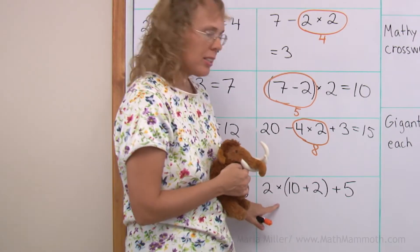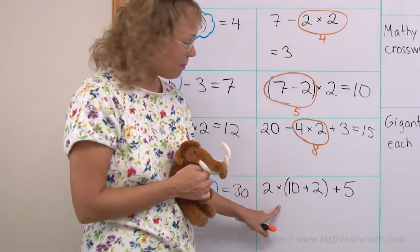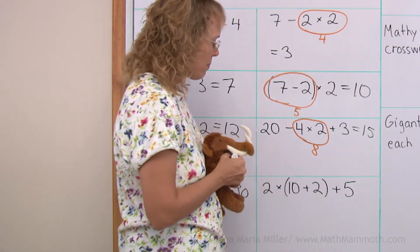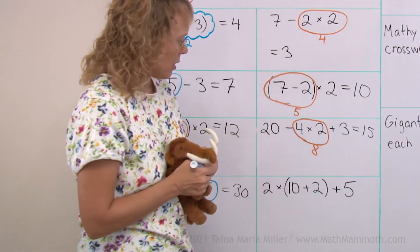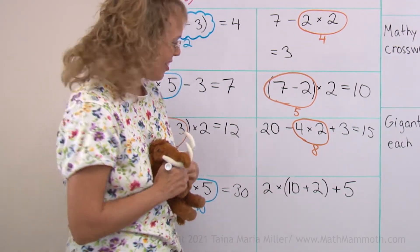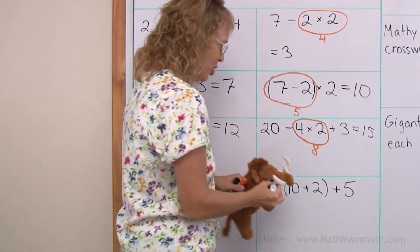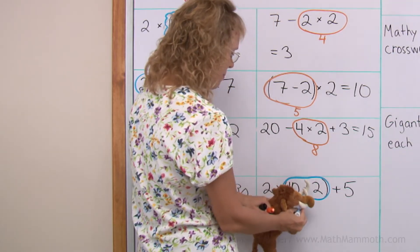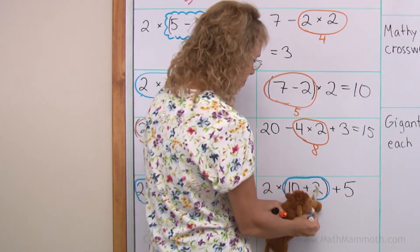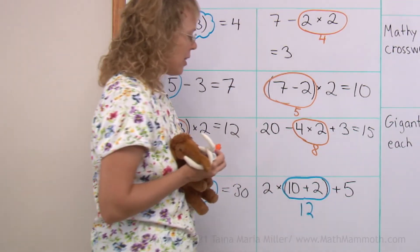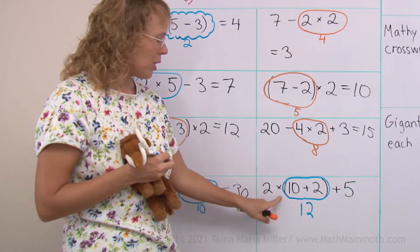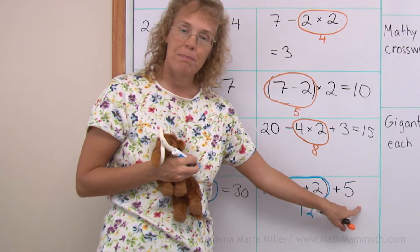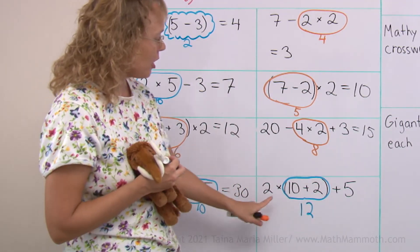Over here it's kind of similar — there's multiplication, addition, addition. But there's a parenthesis, so that surely shows us what gets done first. But now what? 2 times 12 plus 5 — multiplication now first.